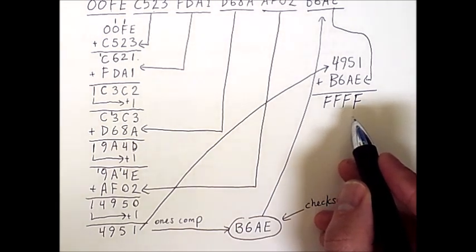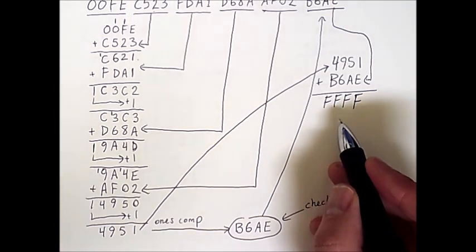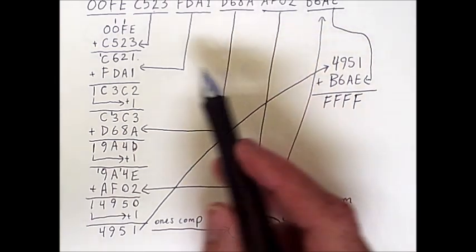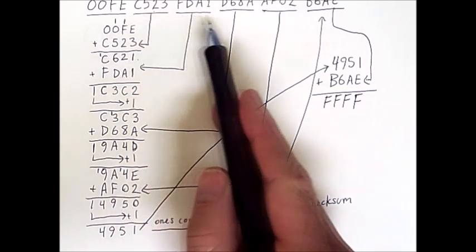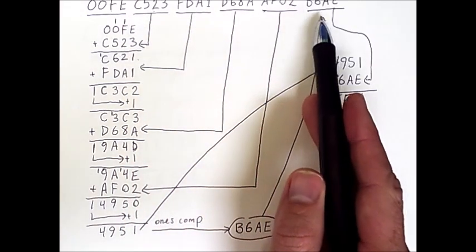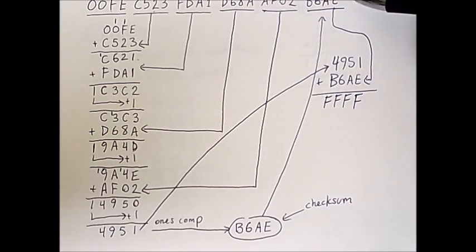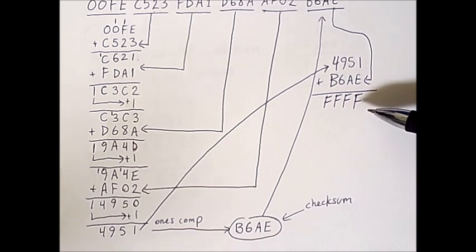This is how we know that what was received is the same as what was sent. The checksum calculation on the receiving side will be all Fs, because we've constructed our result using all of the data, and we've basically assured that the final checksum will produce this particular result.